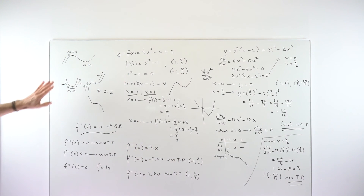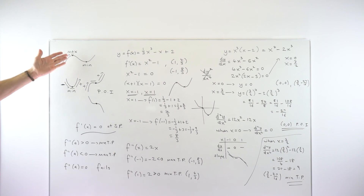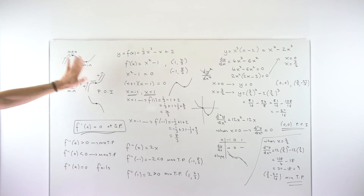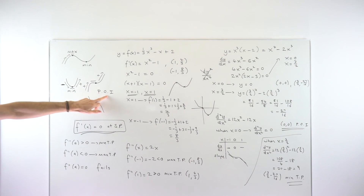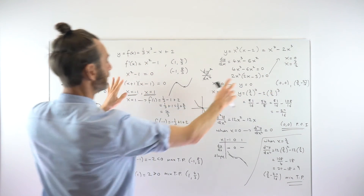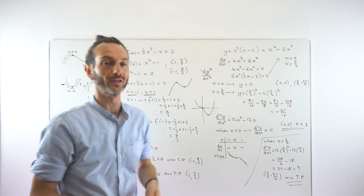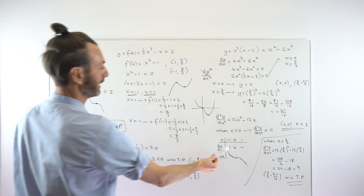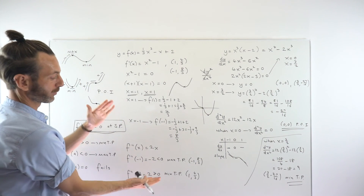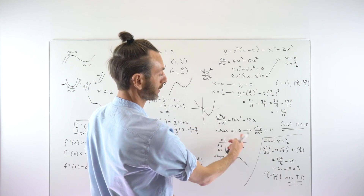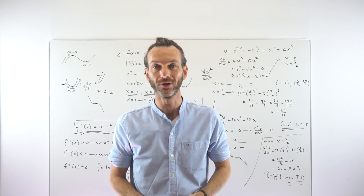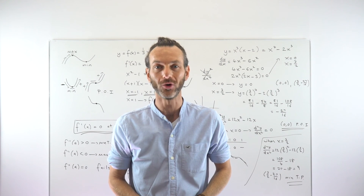The key takeaways: stationary points are defined by the derivative being zero. The types are maximum turning points, minimum turning points, and points of inflection. You find stationary points using the first derivative, then determine their nature using either the second derivative test — positive means minimum, negative means maximum — or a nature table when the second derivative equals zero.